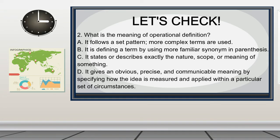Question 2: What is the meaning of operational definition? A. It follows a set pattern — more complex terms are used. B. It is defining a term by using a more familiar synonym in parentheses. C. It states or describes exactly the nature, scope, or meaning of something. D. It gives an obvious, precise, and communicable meaning by specifying how the idea is measured and applied within a particular set of circumstances.